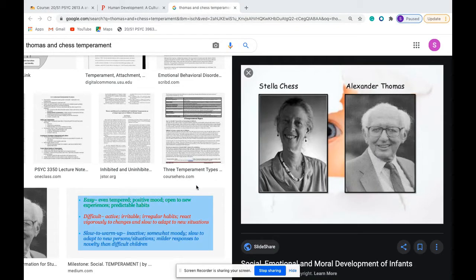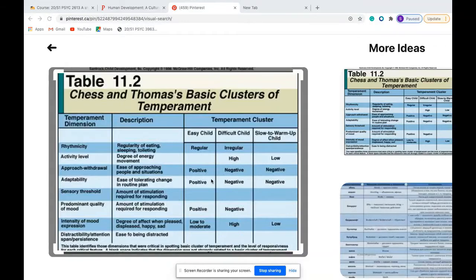Temperament was first introduced as a psychological concept by these two individuals right here, namely Stella Chess and Alexander Thomas. What we have here are these nine characteristics proposed by Thomas and Chess themselves.